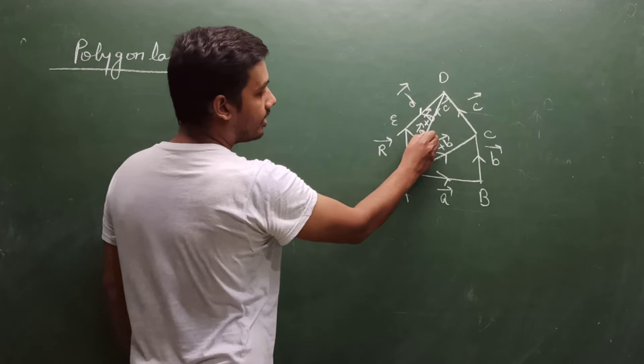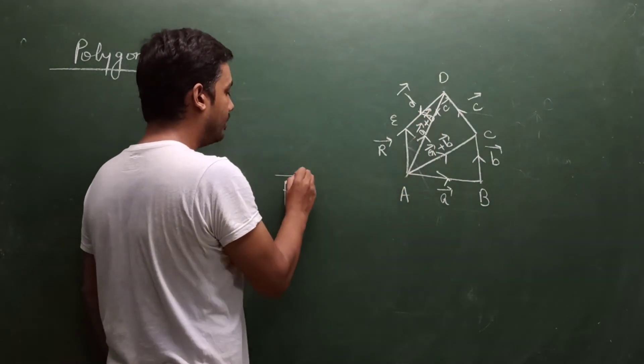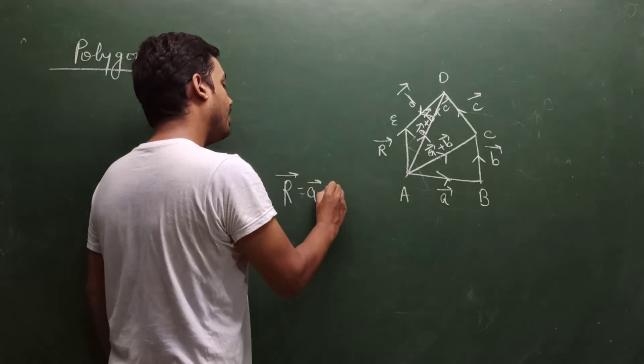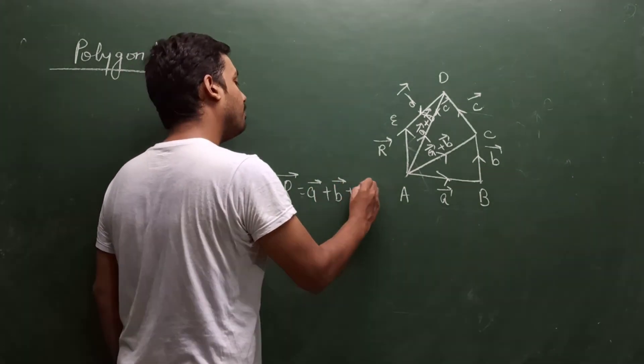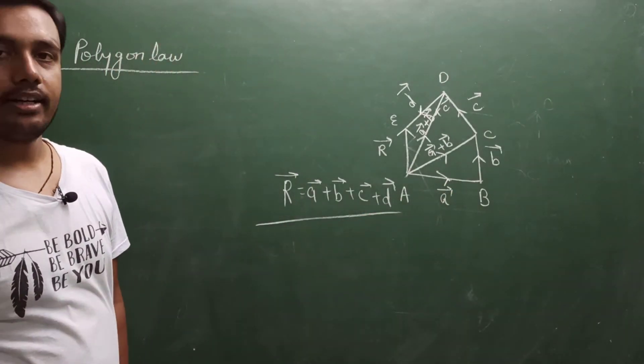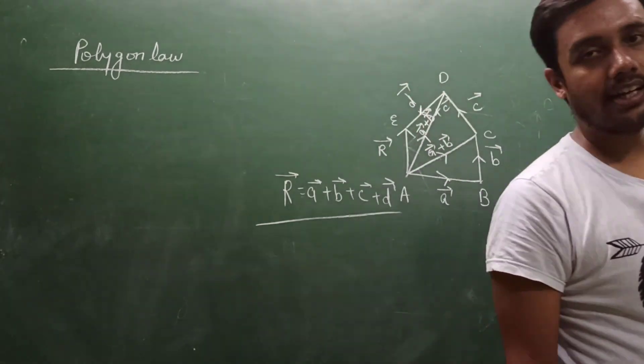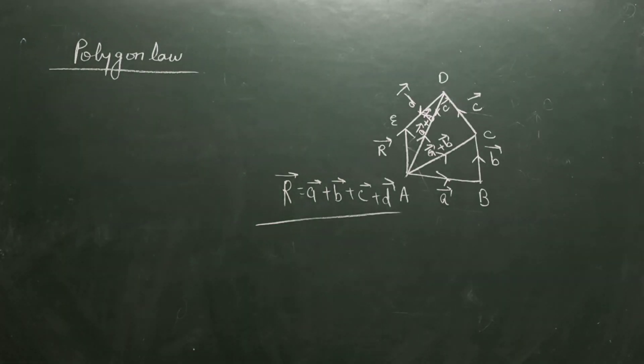Vector A plus vector B plus vector C. This is the Polygon Law of Vector Addition.